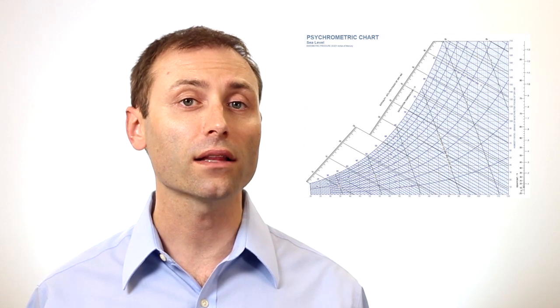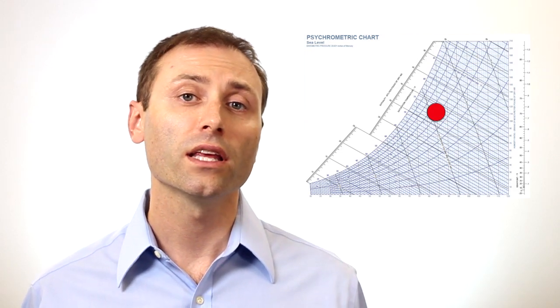So back to the example of the restoration contractor trying to dry out a water-damaged room. The contractor can plot the conditions in the room over time. If he's successful in drying the room out, he can show the client how the dot is moving down on the psychrometric chart.